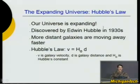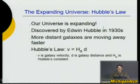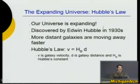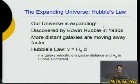Einstein understood that the universe could be infinite. He created his general relativity, published around 1915, though he was thinking about it for many years before. Einstein was troubled by the universe implied by general relativity — he was worried it would collapse in on itself. So at one point he postulated something called a cosmological constant: a repulsive force everywhere in the universe to keep it from collapsing in on itself.